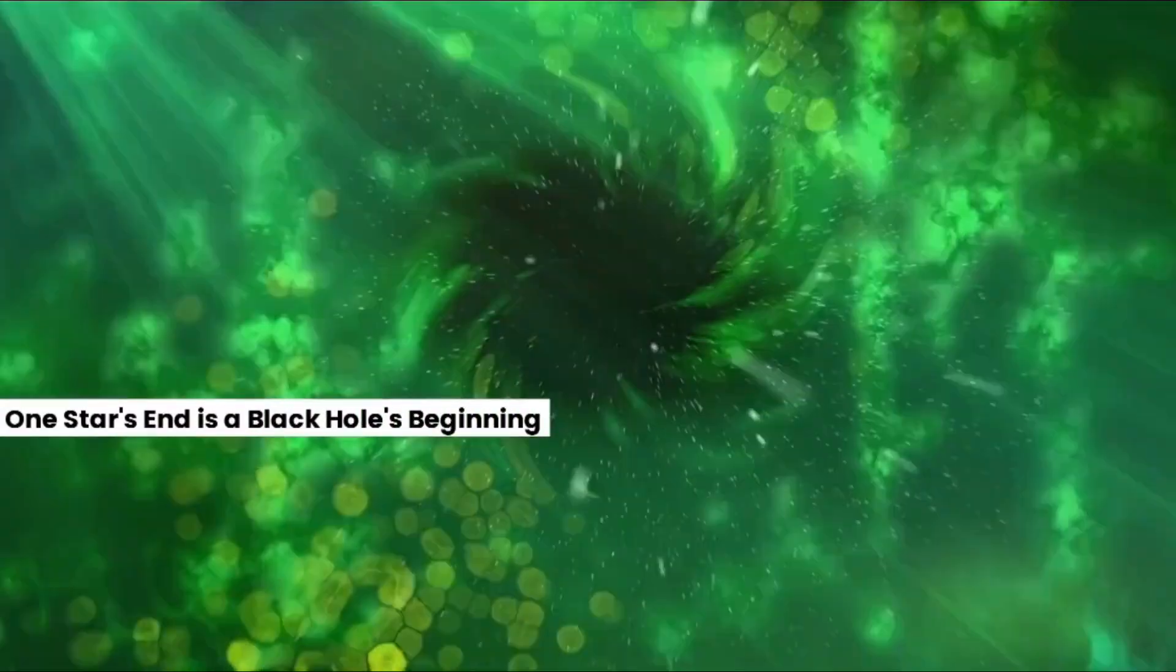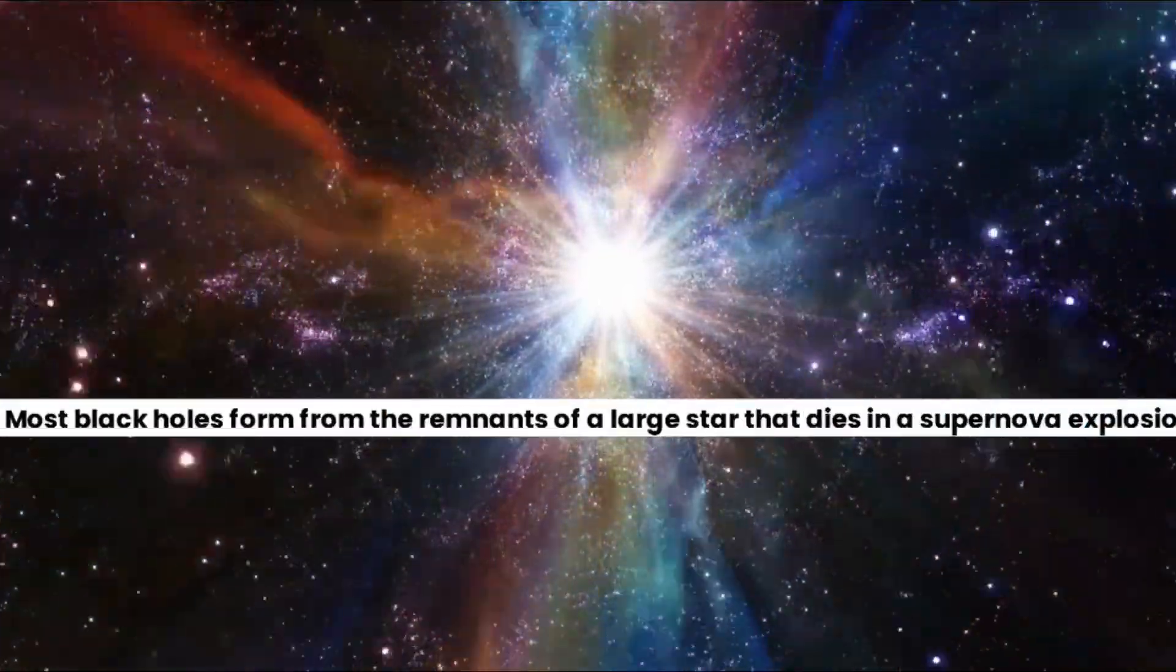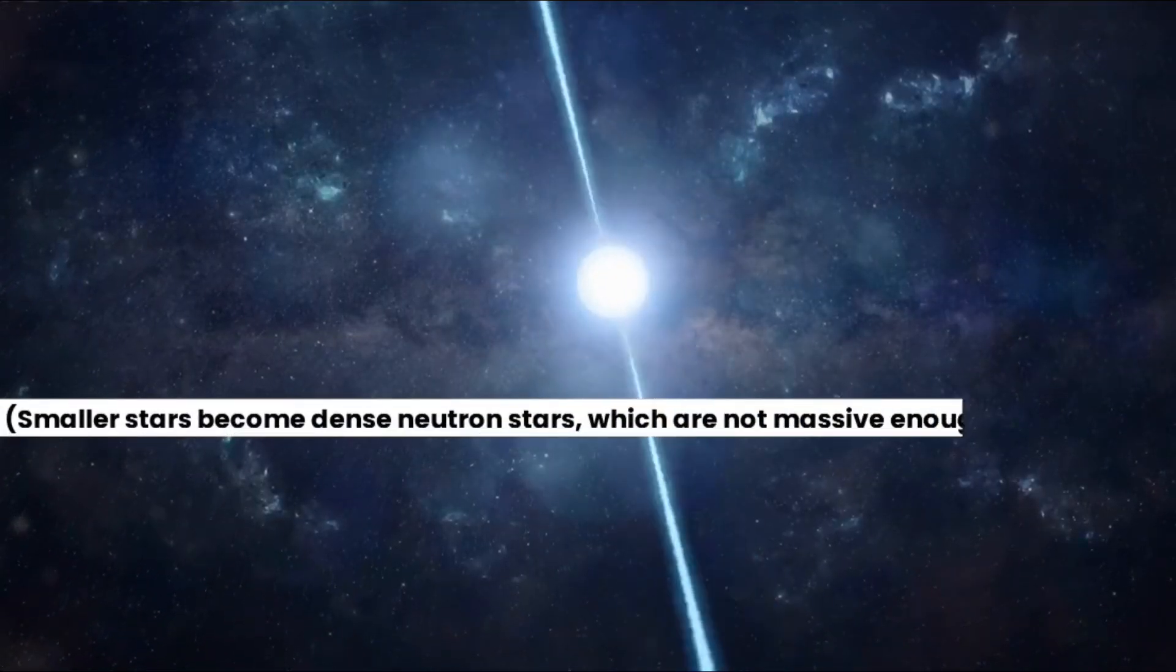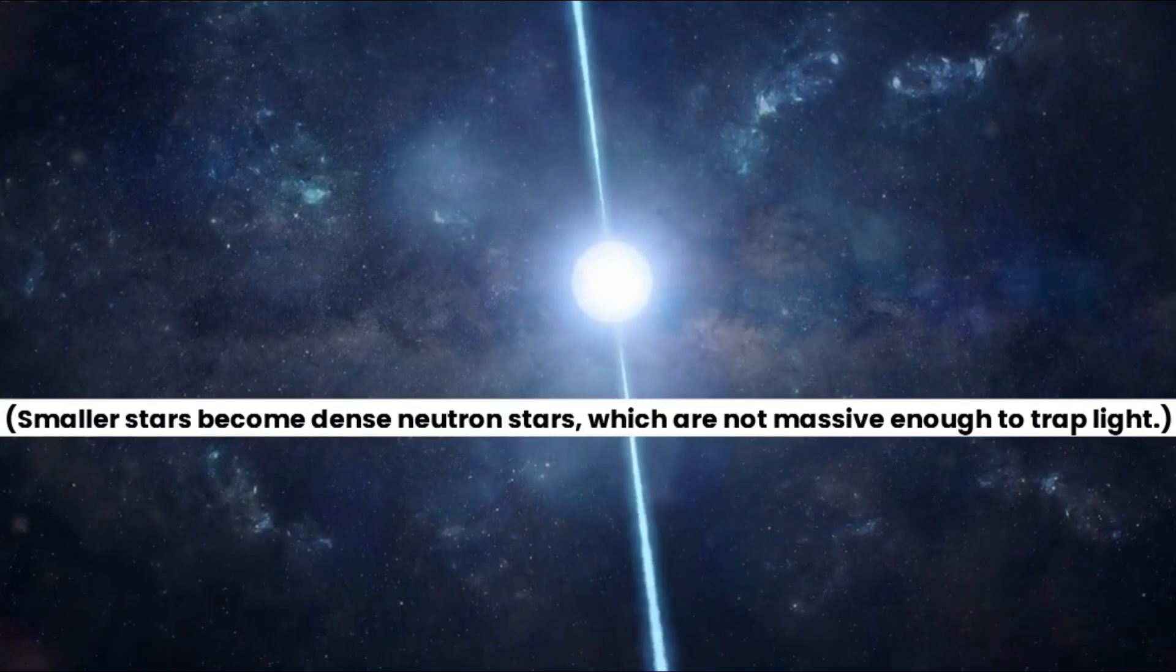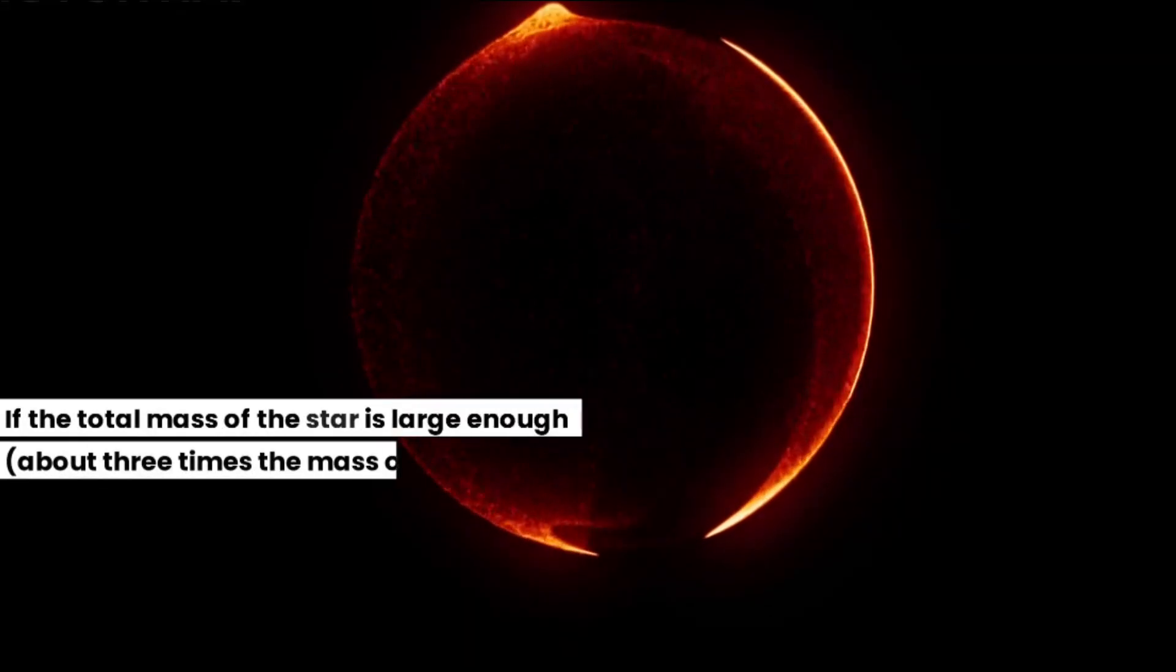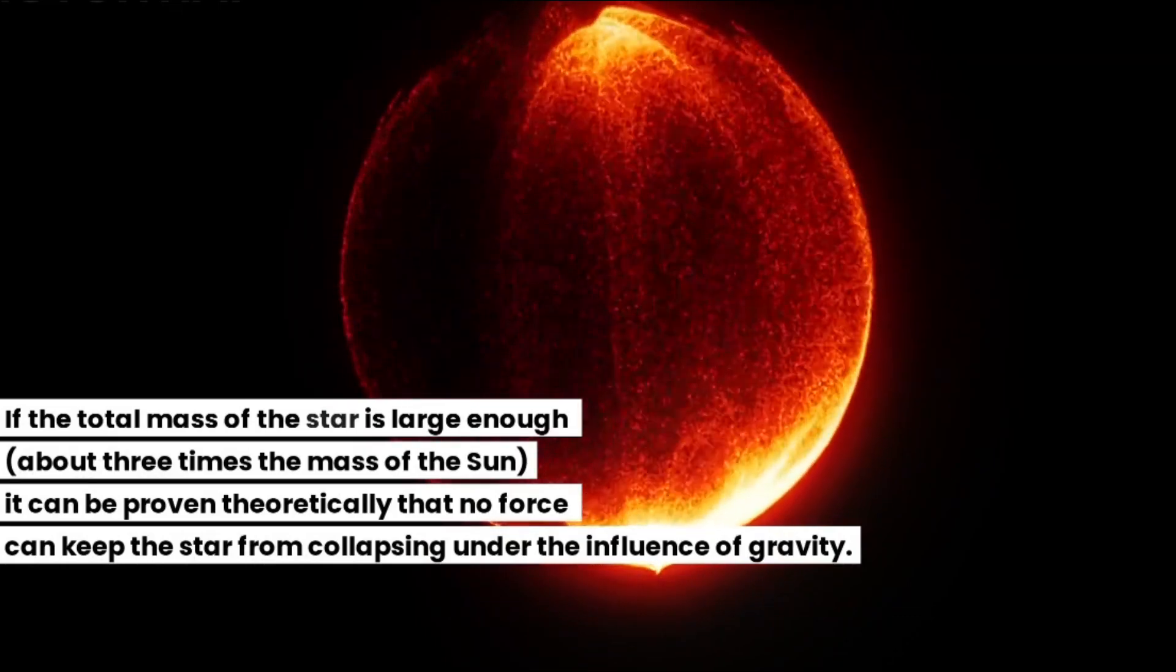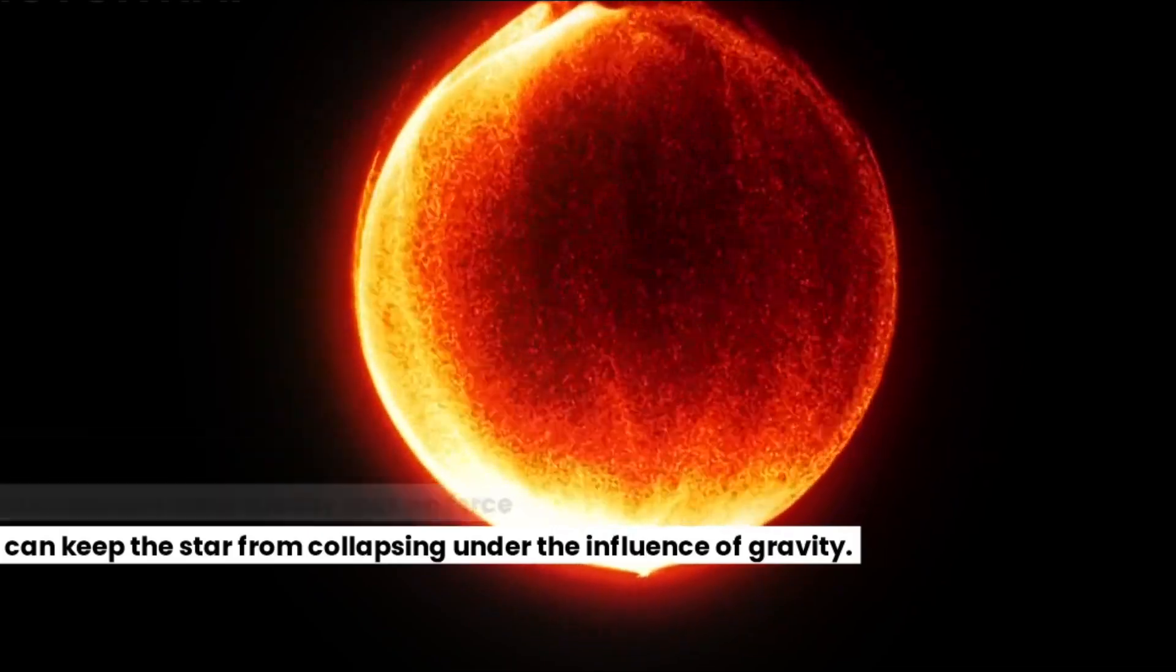One star's end is a black hole's beginning. Most black holes form from the remnants of a large star that dies in a supernova explosion. Smaller stars become dense neutron stars, which are not massive enough to trap light. If the total mass of the star is large enough, about three times the mass of the Sun, it can be proven theoretically that no force can keep the star from collapsing under the influence of gravity.